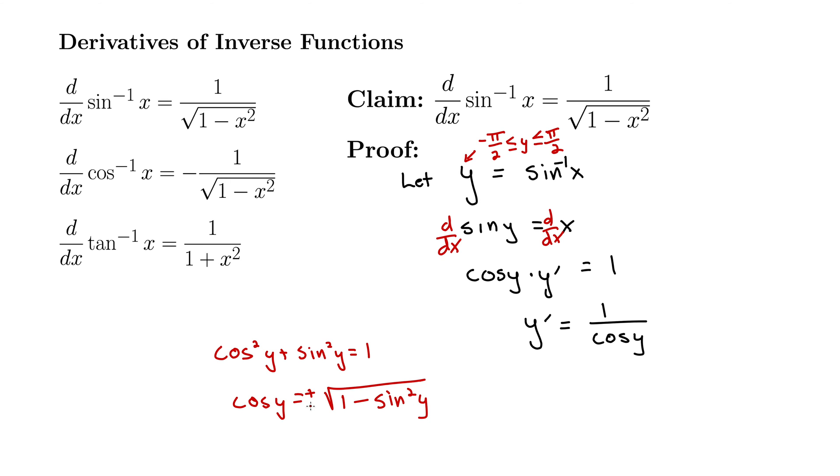And actually it's plus or minus square root. But let's go back up here. When I restricted y to be between negative pi over 2 and pi over 2, for cos of y, if you recall what cosine looks like, cos is always positive in that range.